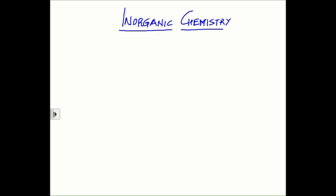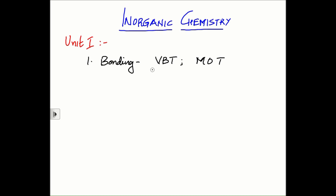The first unit of inorganic chemistry deals with bonding. There are two concepts in bonding: VBT and MOT — valence bond theory and molecular orbital theory — and we'll be discussing both of them in detail. The second part of the unit deals with ionic compounds.